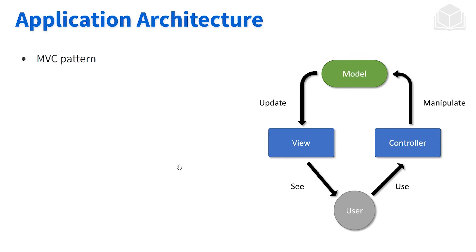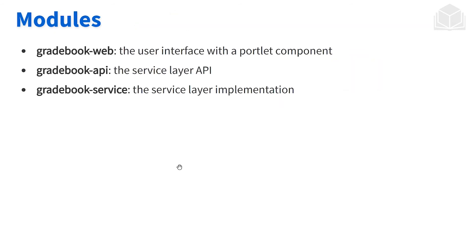The user will see the view, and as the user interacts with the view, it's going to be sending requests to the controller. The controller is going to manipulate data at the model level, and then the model is going to push that data back to the view so that the most up-to-date data will be displayed. That's the long story short.